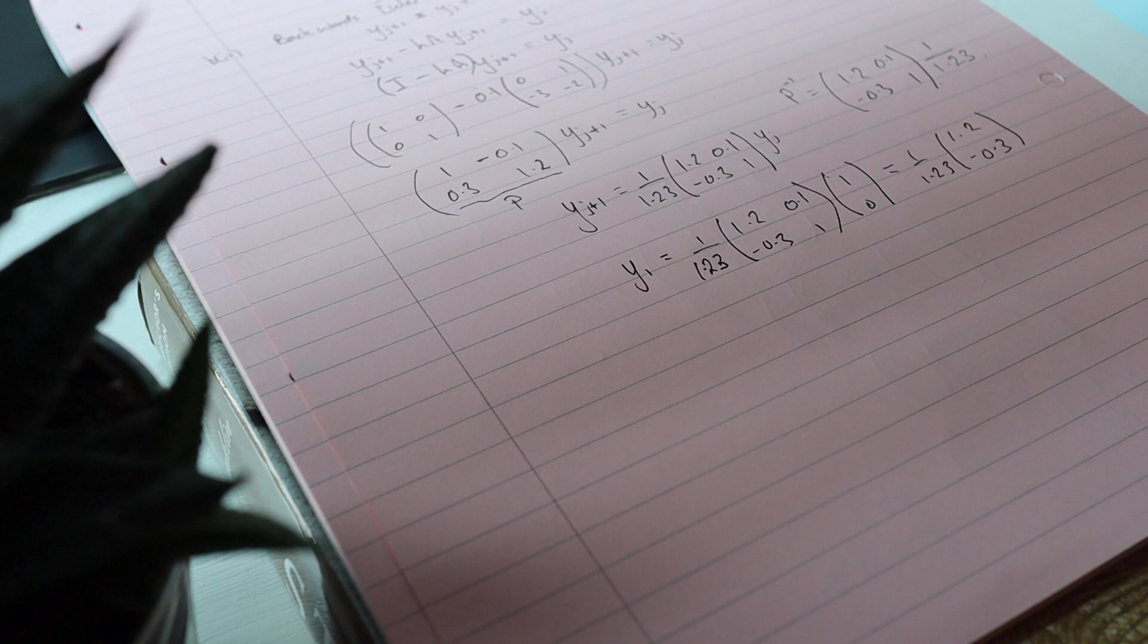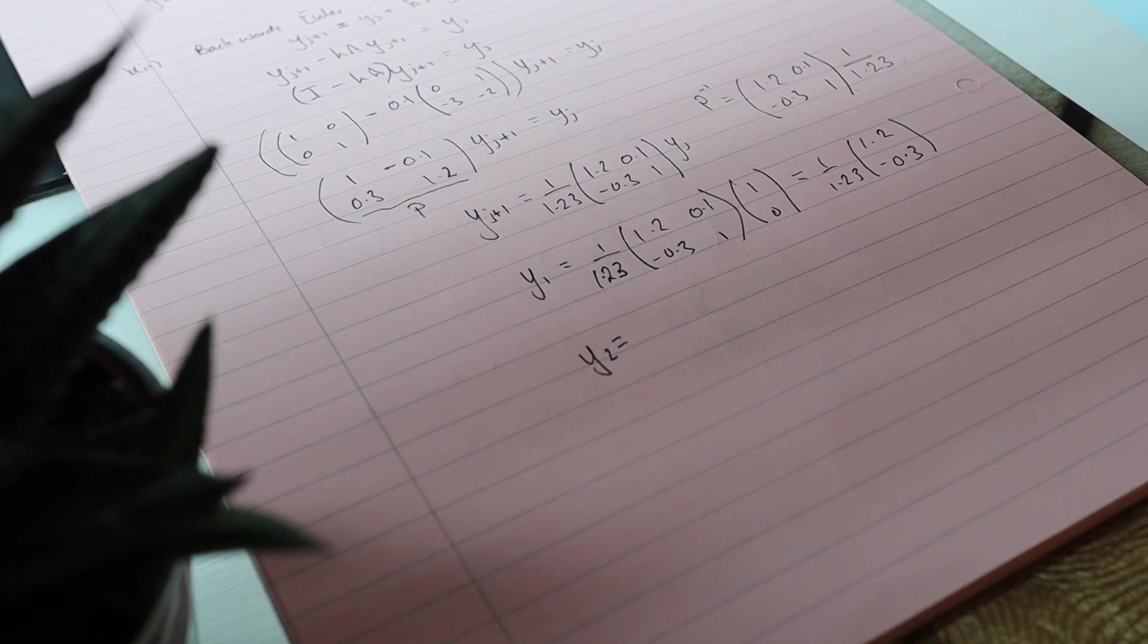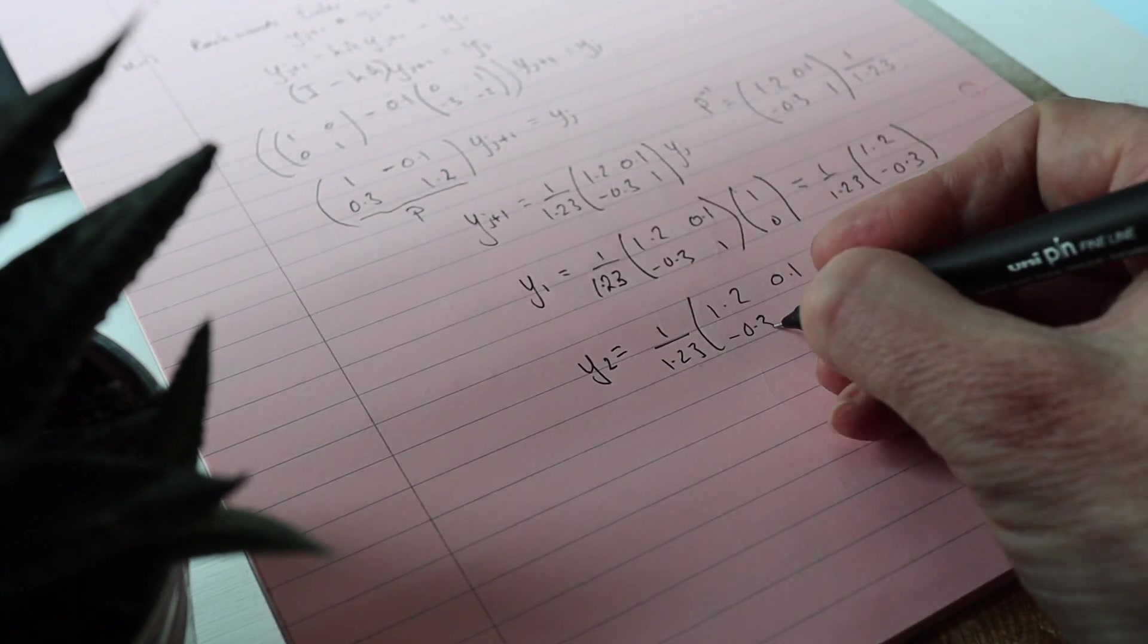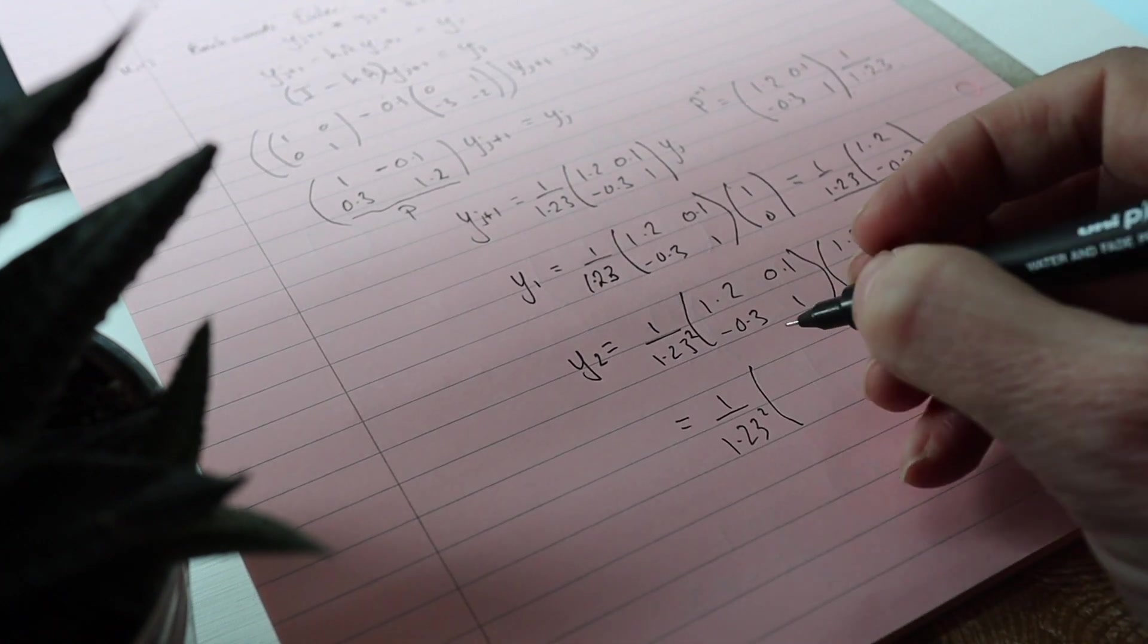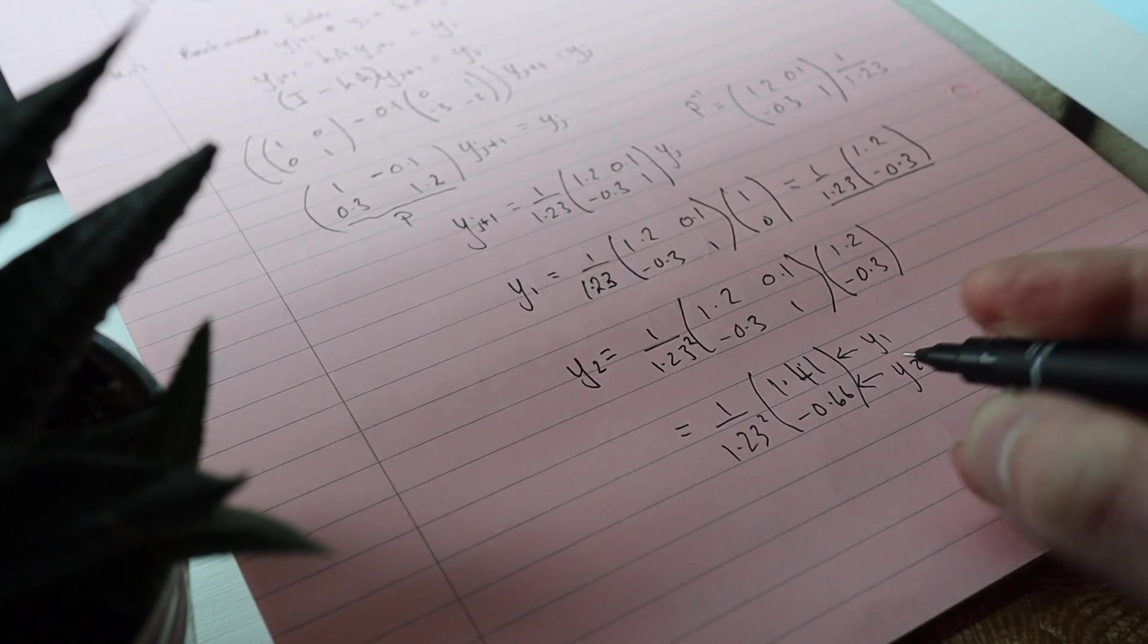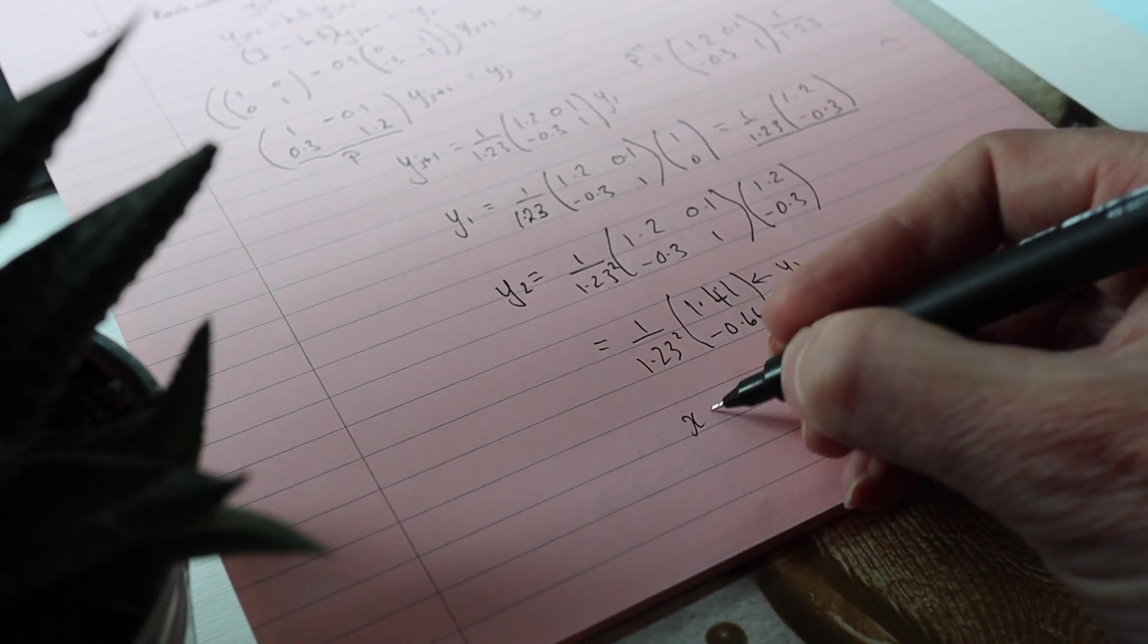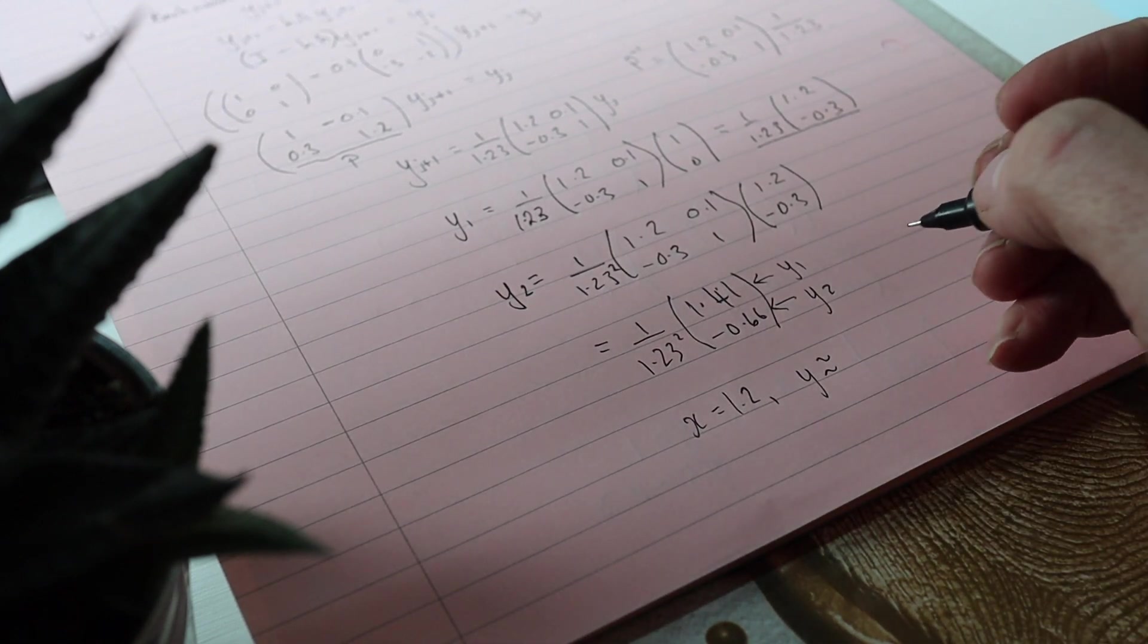So I'm going to pre-multiply by P minus 1, so that'll go and I'll be left with y j plus 1 on its own. And it's going to be the inverse of P times by the previous value of y. So that's good, so I've got that. Now I need another iteration. This is my y, this is just y dash, I don't need that. So y is 1.41 divided by 1.23 squared. So when x is 1.2, y is approximately 0.932 to 3 significant figures.